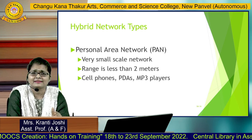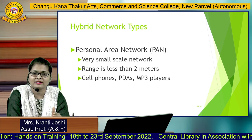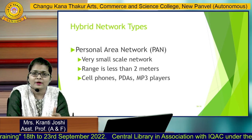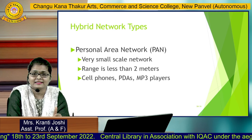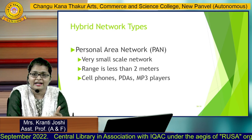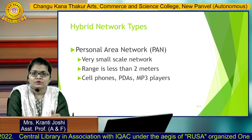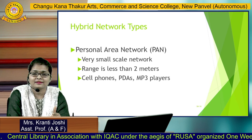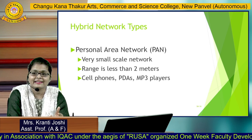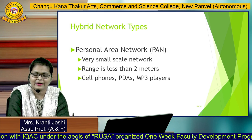The last type is PAN — Personal Area Network. It is a very small-scale network with a range of less than 2 meters. Examples include cell phones, personal digital assistants, MP3 players, and your mobile hotspot. That is your personal area network. Those are the types of networks. Hope you understood these topics. Thank you.